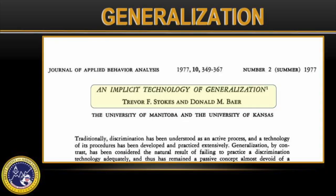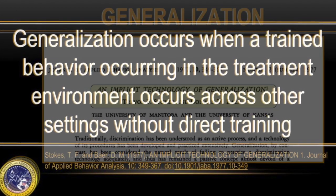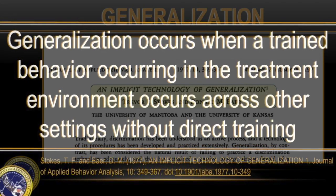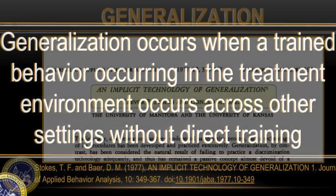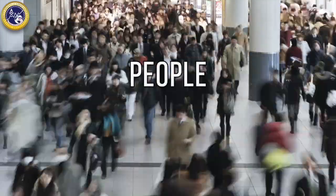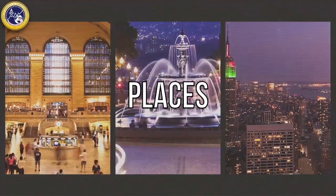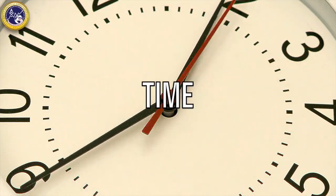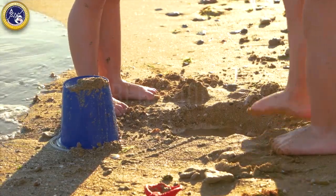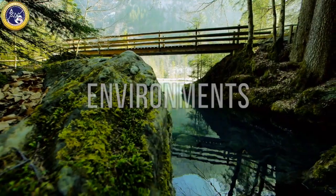In their 1977 review paper, Stokes and Baer explained that generalization occurs when a trained behavior occurring in the treatment environment occurs across other settings without direct training. In this context, across settings refers to people, places, time, behaviors, and environments.